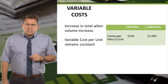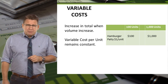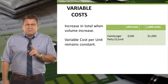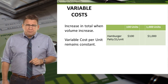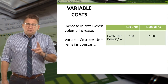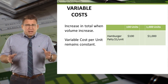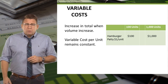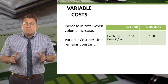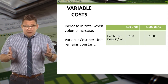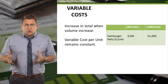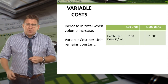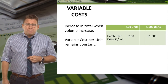Make sure you understand this concept: variable costs increase in total, but are fixed per unit. For example, McDonald's has many variable costs. One would be the cost of hamburger patties. As more hamburgers are sold, more patties are used, so the cost of hamburger patties goes up.